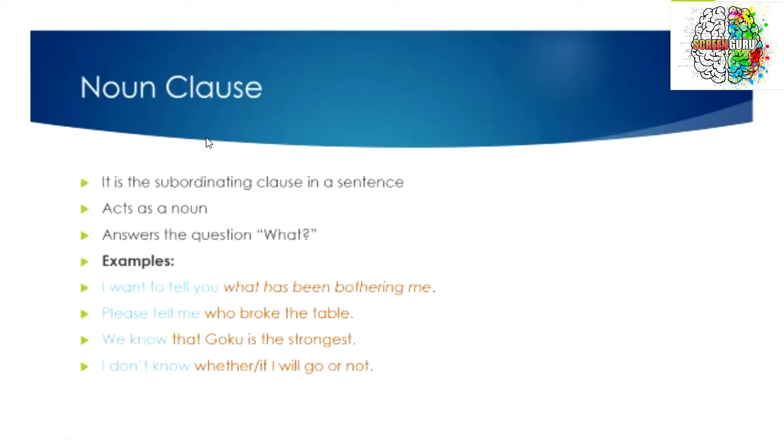First, we are going to see noun clause. Noun clause is the subordinating clause in a sentence which acts as a noun, and it answers the question 'what'. For example, I want to tell you what has been bothering me.